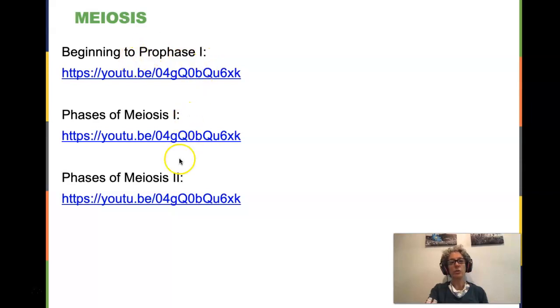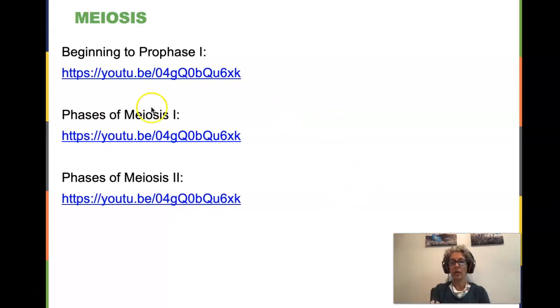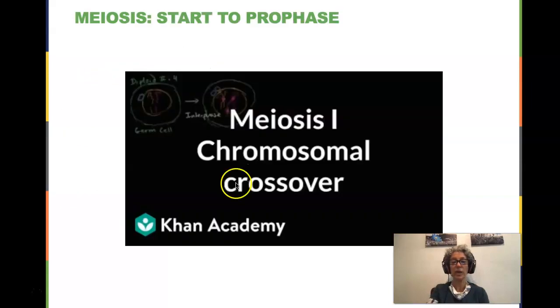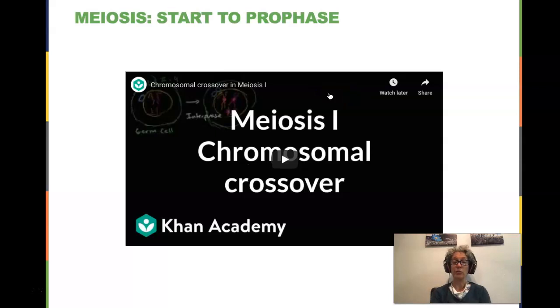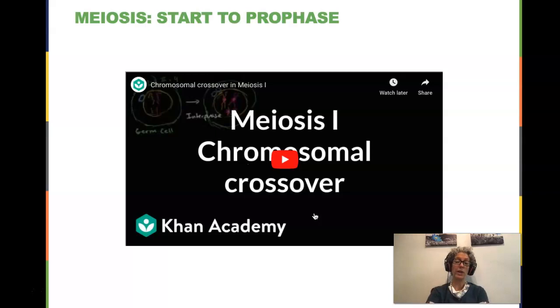There are links to Khan Academy YouTube videos that go into great detail, from the beginning of meiosis through prophase and all of the phases of meiosis I and meiosis II. I'll preview those in this lecture but leave you to refer back to those if you need greater detail. The first one talks about meiosis I — there are two separate cell divisions — and it covers chromosomal crossover. The phases of meiosis have similar names to the phases of mitosis.